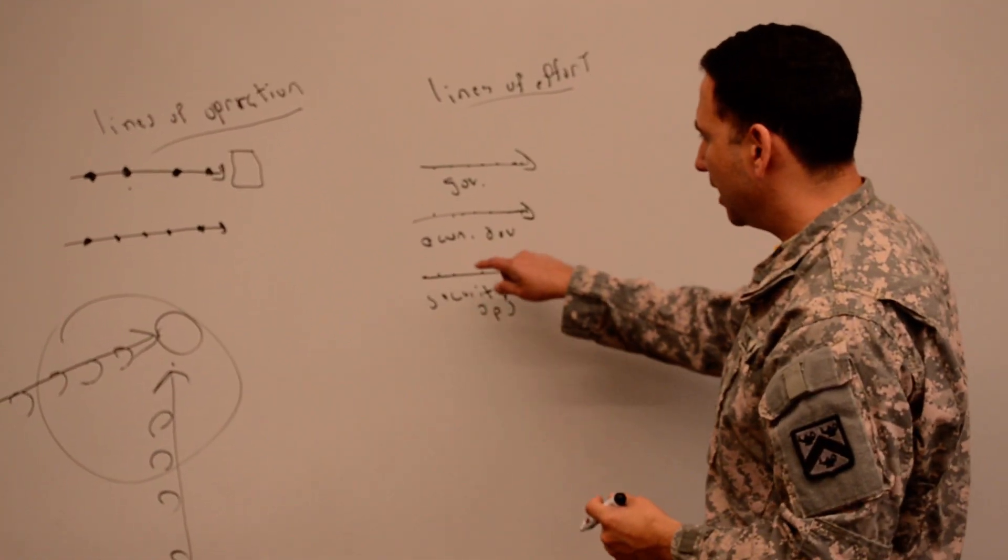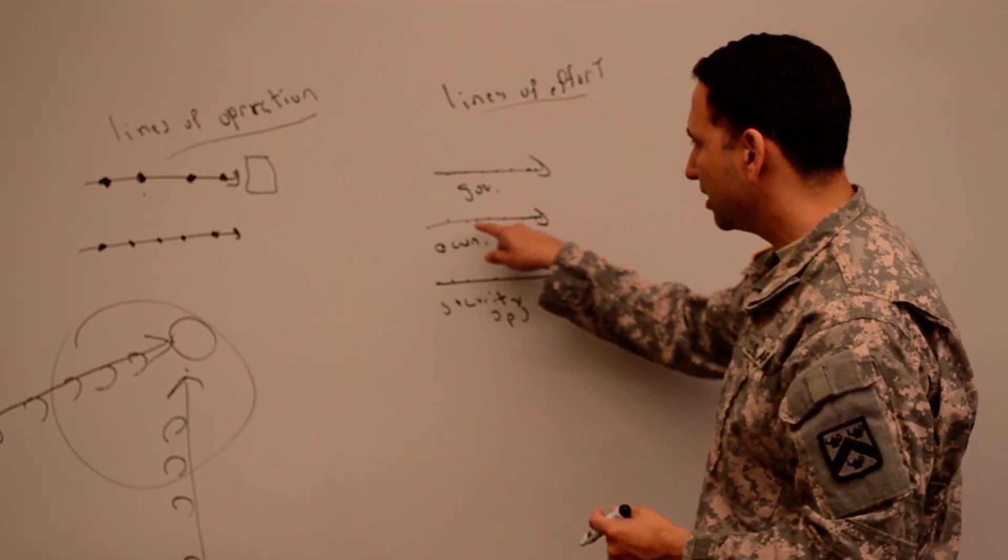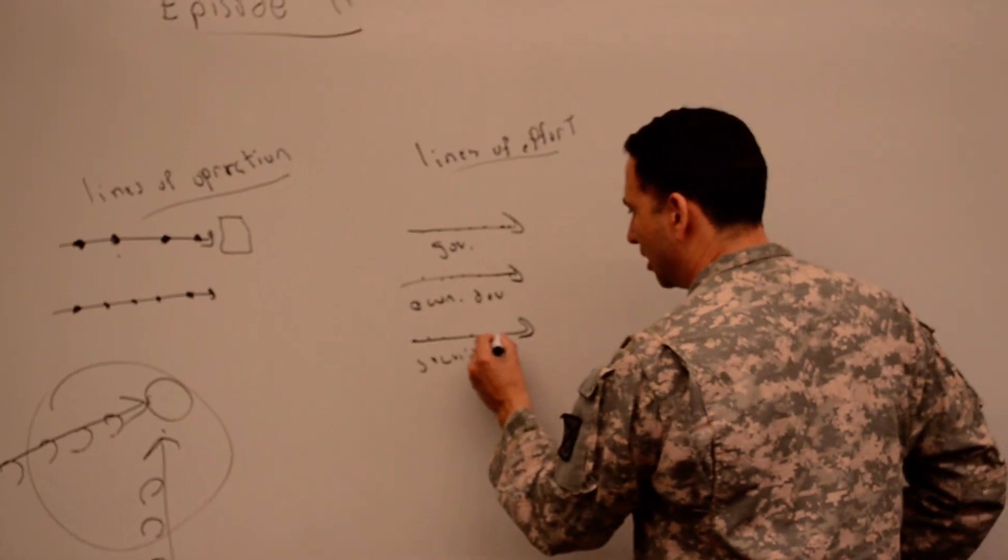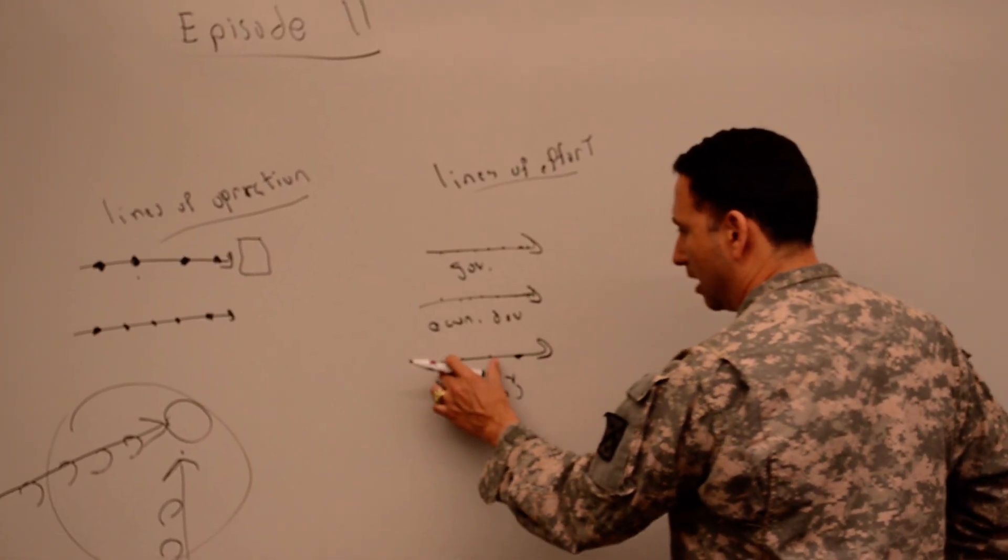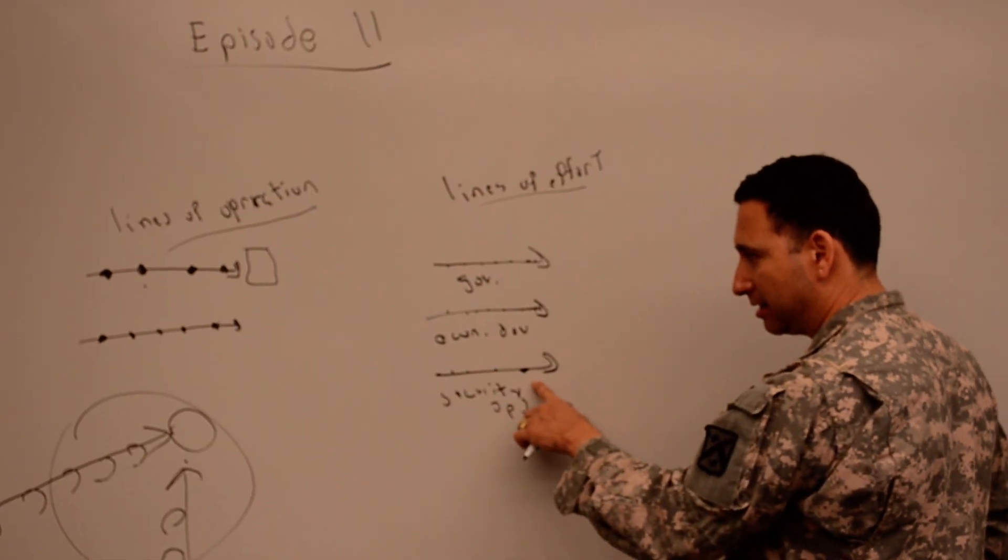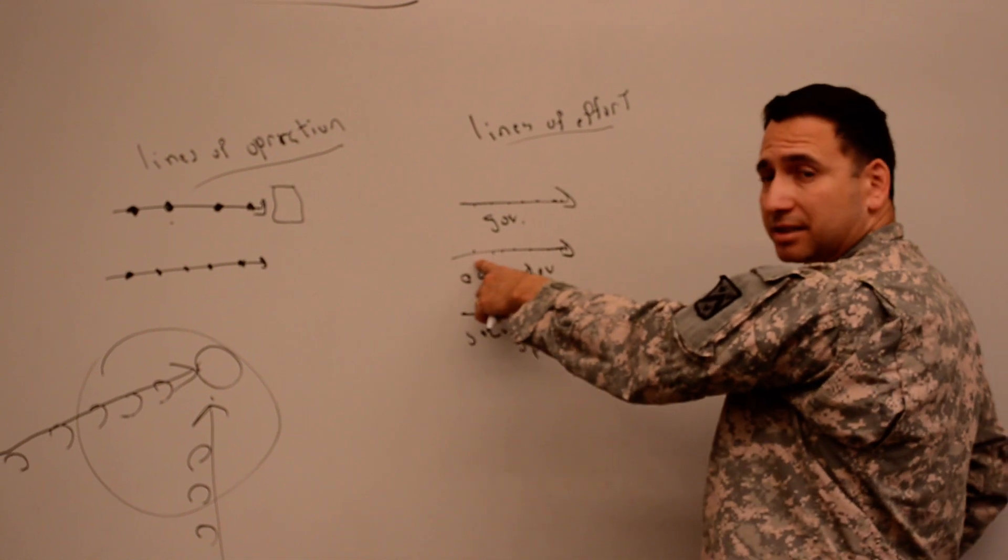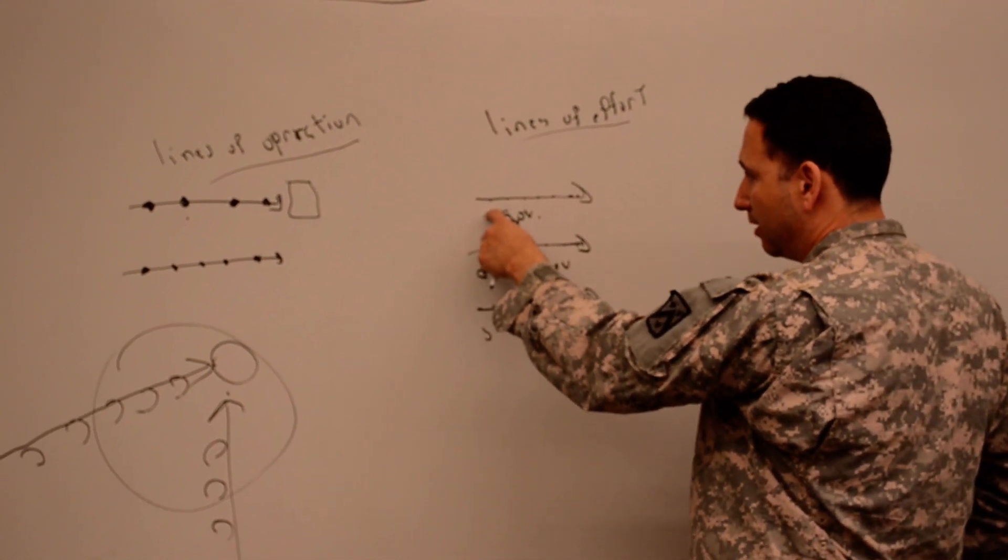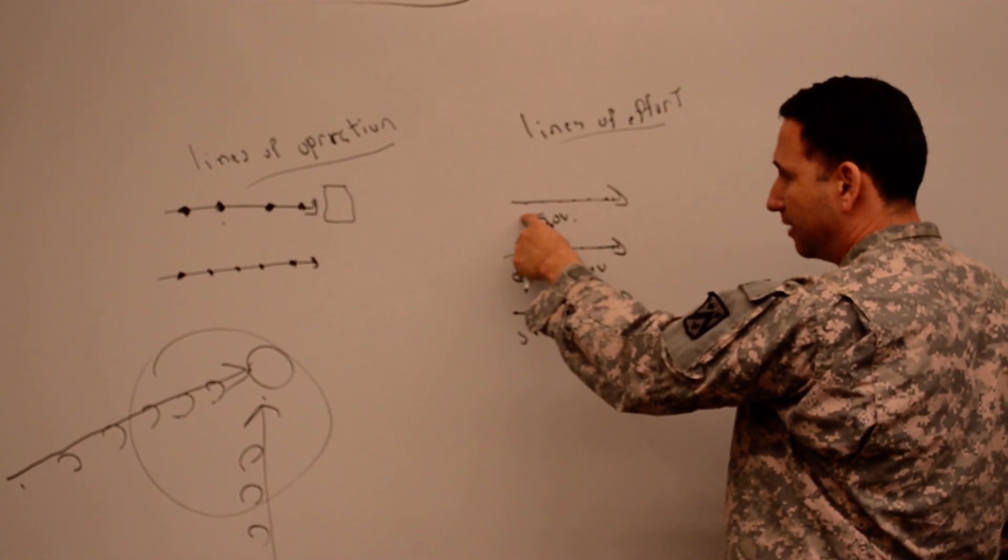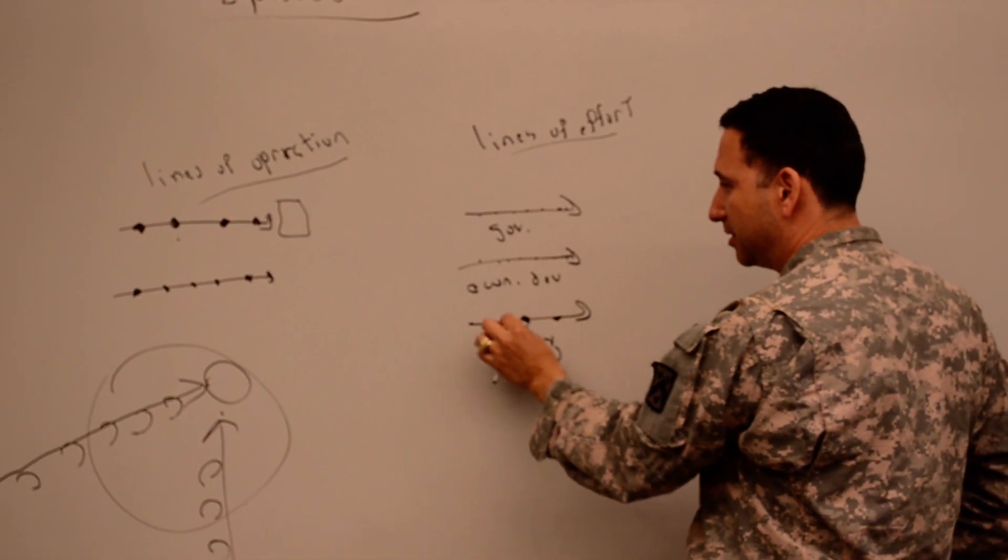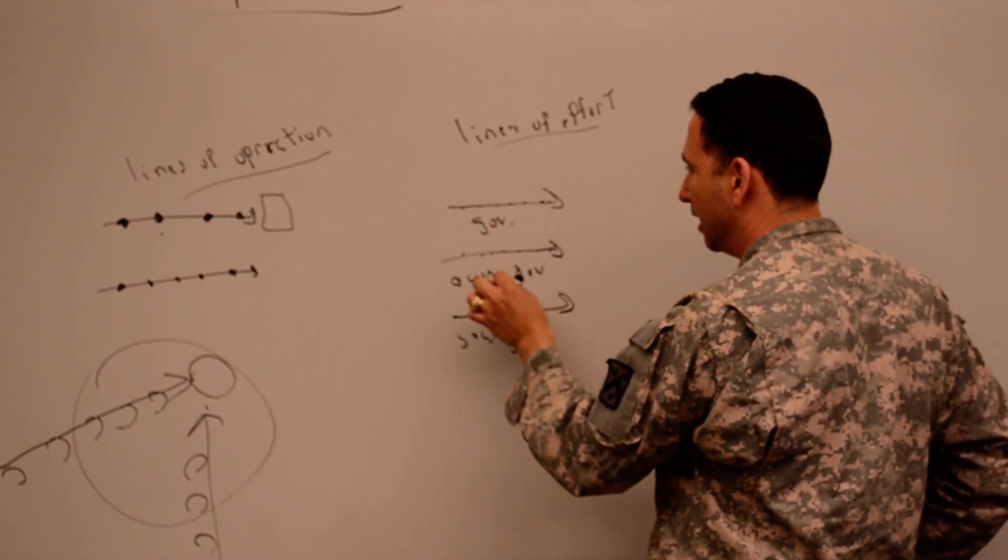You can see the difference between different cities or different geographic regions as we move and conceptual containers like governance, economics, development, security operations. Each of these, by the way, can share some of the same objectives. So security operations would obviously be important for conducting raids, for instance. But it would also be important for securing projects and for securing significant key leader engagements that occur. So the same objective can be on more than one line of effort.